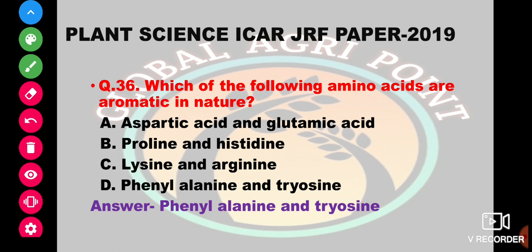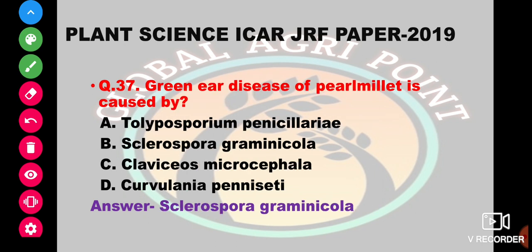The green ear disease of pearl millet is caused by Tolyposporium penicillariae, Sclerospora graminicola, Claviceps microcephala, or Curvularia penniseti. The answer is Sclerospora graminicola.